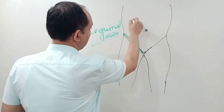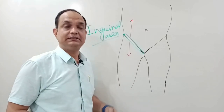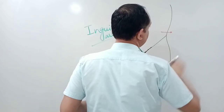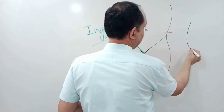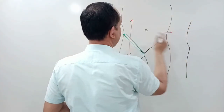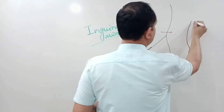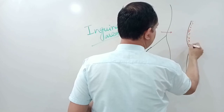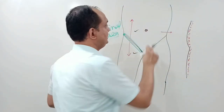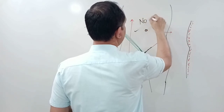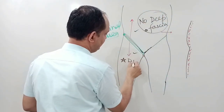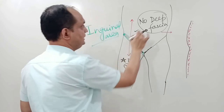If you take a section in the sagittal plane, you can see the anterior abdominal wall. The skin of the anterior abdominal wall has superficial fascia and fatty tissue. The most important thing is that the anterior abdominal wall has no deep fascia — there is no deep fascia here.